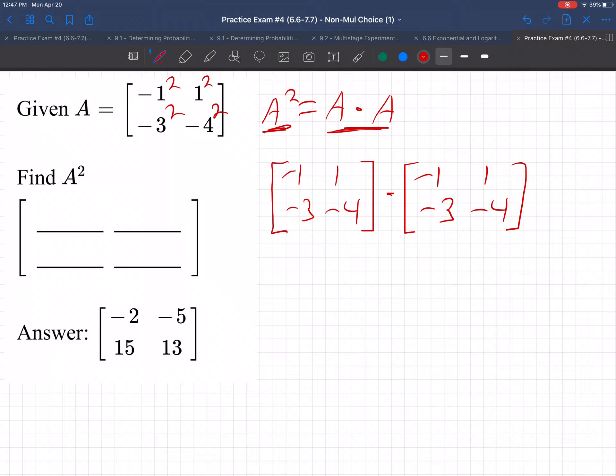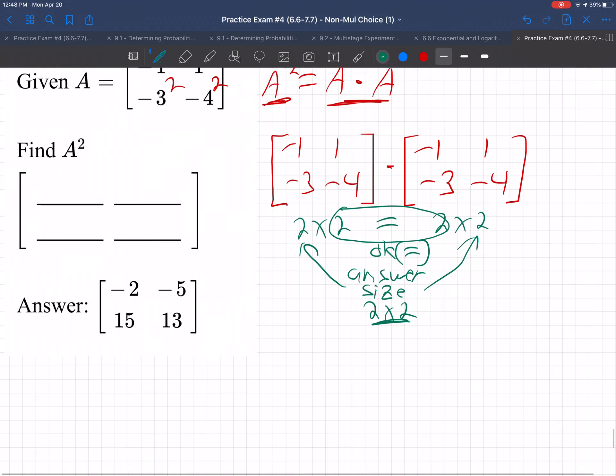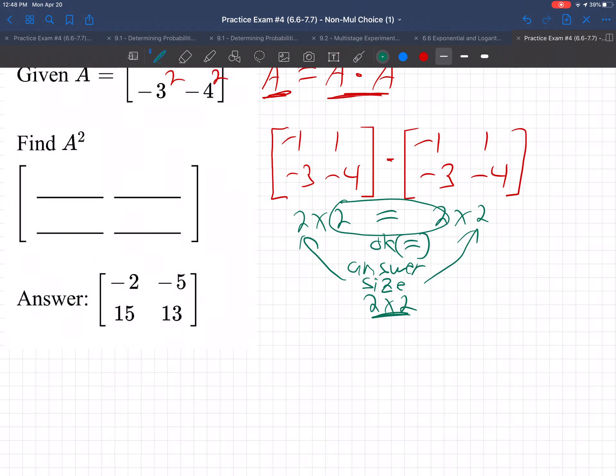Now remember how matrix multiplication works. You've got to check the sizes. So this is a 2 by 2. This is a 2 by 2. The inside numbers match, so it's okay. And the answer matrix size will be the two outside numbers, which is also 2 by 2. So yes, we can multiply this matrix by itself because the two inside numbers match and are equal. The result will be a 2 by 2 matrix.